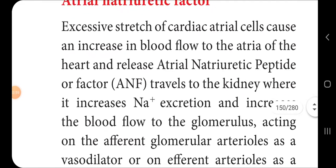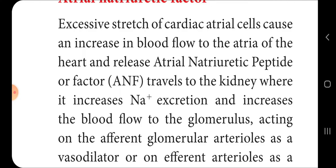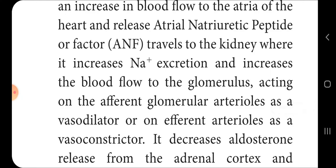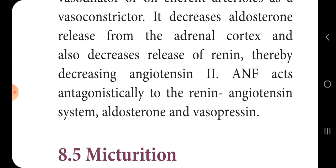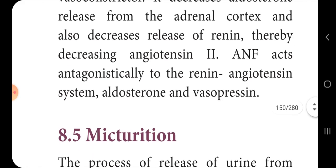The next topic is atrial natriuretic factor (ANF). Excessive stretch of cardiac atrial cells caused by increased blood flow to the atria triggers the release of atrial natriuretic peptide or ANF. ANF travels to the kidney where it increases sodium ion excretion and increases blood flow to the glomerulus, acting on the afferent glomerular artery as a vasodilator and on the efferent arteriole as a vasoconstrictor. It also decreases aldosterone release from the adrenal cortex and decreases the release of renin, thereby decreasing angiotensin 2.